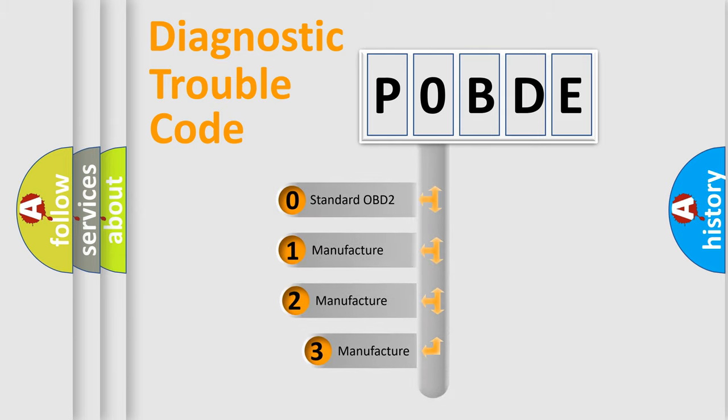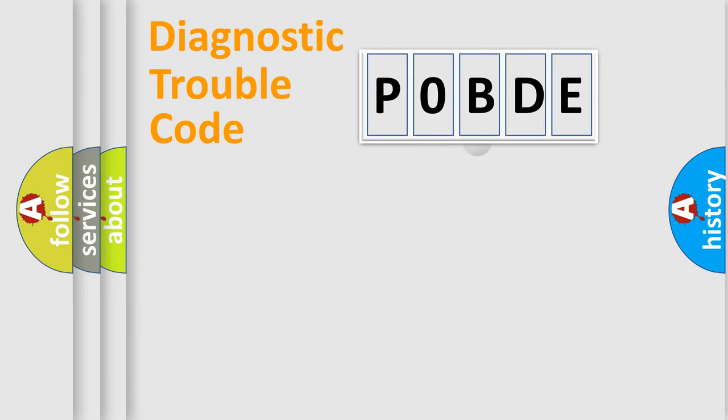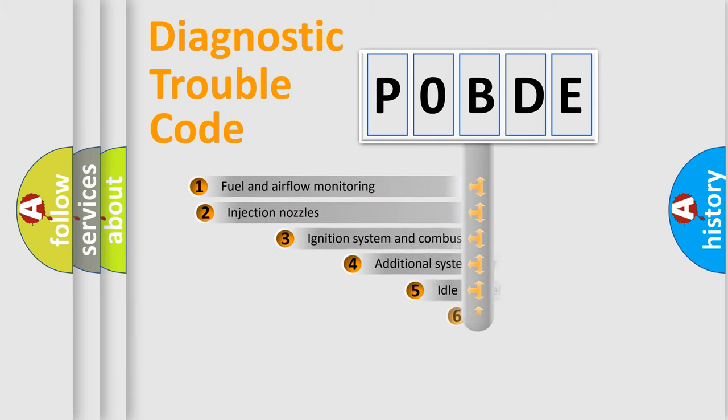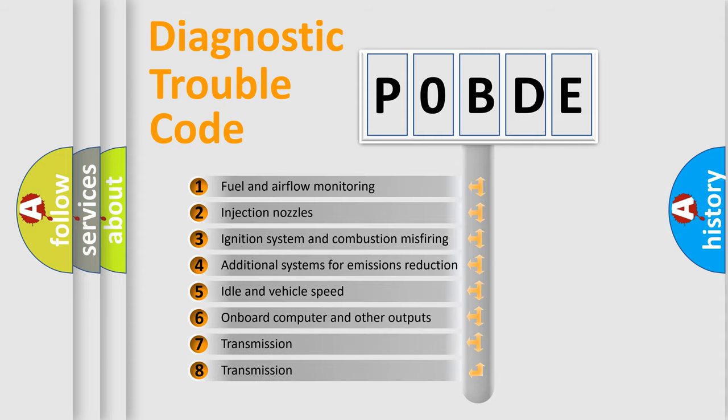If the second character is expressed as zero, it is a standardized error. In the case of numbers 1, 2, or 3, it is a manufacturer-specific error. The third character specifies a subset of errors.